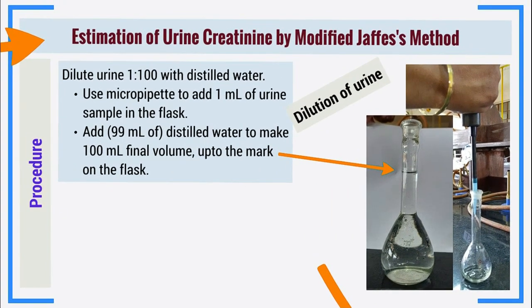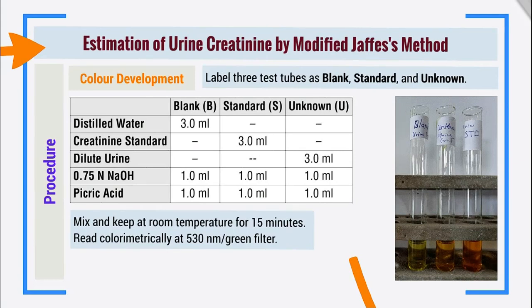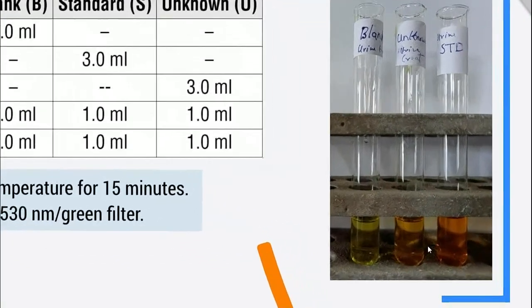For the second part of the urine creatinine practical, take three test tubes labeled blank, standard, and unknown. Add 0.75 normal NaOH and 0.4 normal picric acid — 1 mL each — in all three test tubes. Then add 3 mL each of distilled water, creatinine standard, and diluted urine into blank, standard, and unknown respectively. Mix properly, keep at room temperature for 15 minutes, then read colorimetrically at 530 nm or against a green filter. The orange color of creatinine picrate develops in the standard and unknown tubes.